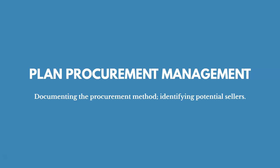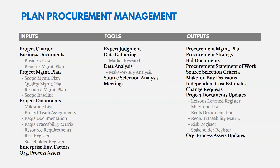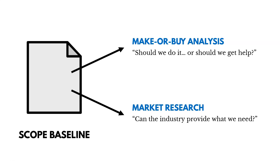With Plan Procurement Management, we're documenting the procurement method and identifying potential sellers. The key tools are market research and make-or-buy analysis. Make-or-buy analysis determines whether we should make something ourselves or buy it from someone else — focusing on what we do best. If we're not good at something that needs to be done for the project, we may need to buy it from an outside vendor.